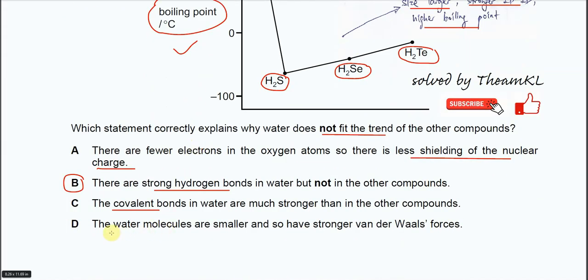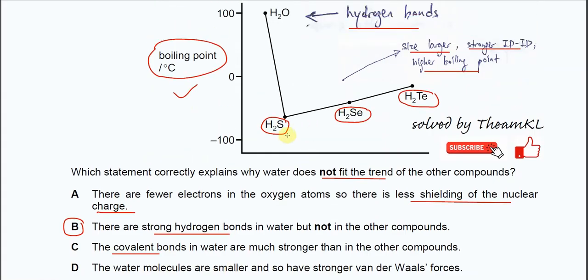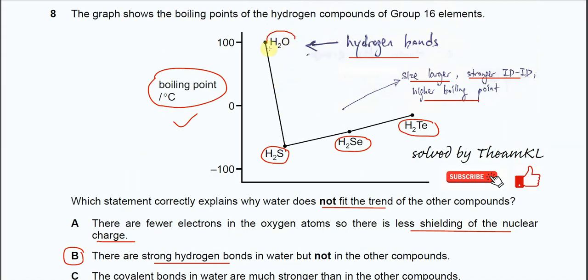And the last one. The water molecules are smaller so have stronger van der Waals forces. So this is wrong of course. The molecule when it's larger, as I told you, from H2S to H2Se to H2Te, when the size is larger, actually the boiling point is higher because of stronger IDID. It's just because H2O can form the stronger intermolecular force.